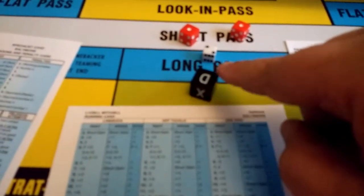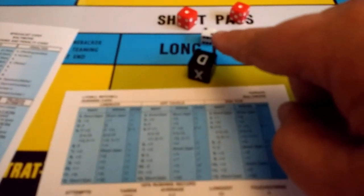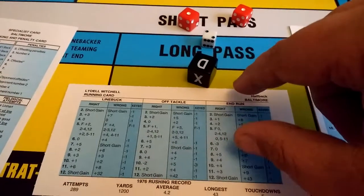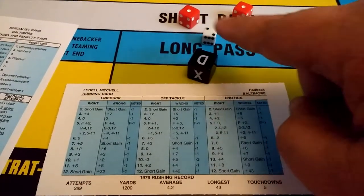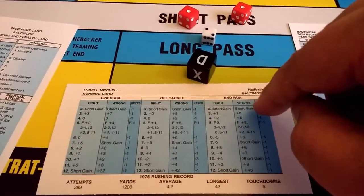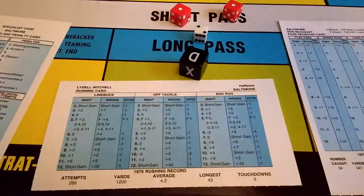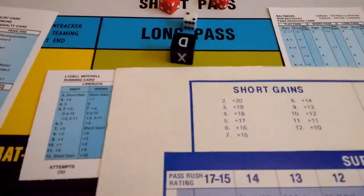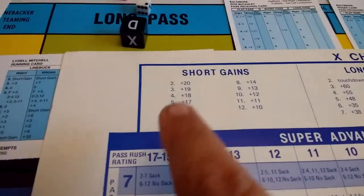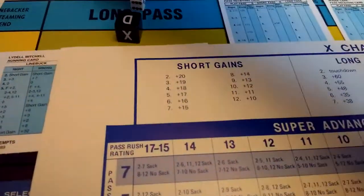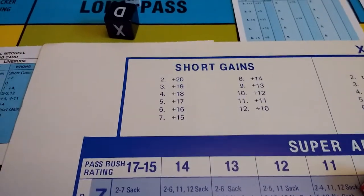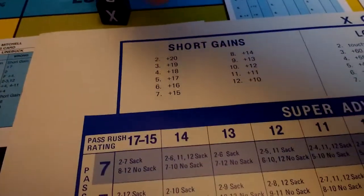No chance of a penalty. Roll the two, so you're going to look on the running backs card. End run, guessed wrong — number two is a short gain. So for a short gain, you go to your X chart, which has short gains and long gains right there. You see it goes from two to twelve, so you're adding your two red D6s. Go ahead and roll those — roll to five, which means Lydell Mitchell on second and ten picks up 17 yards for a first down for the Colts. Fans of Memorial Stadium are going wild.